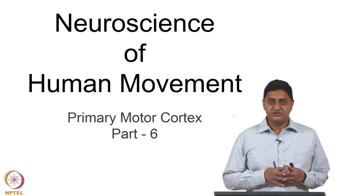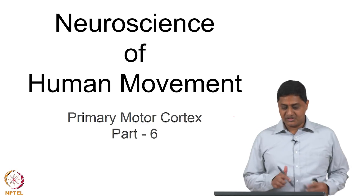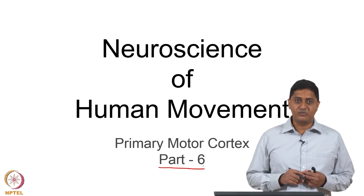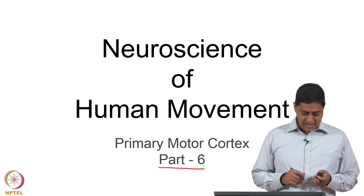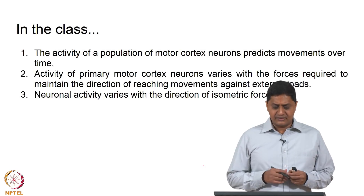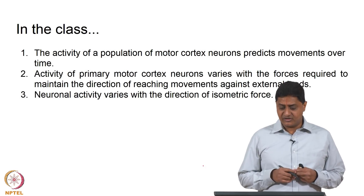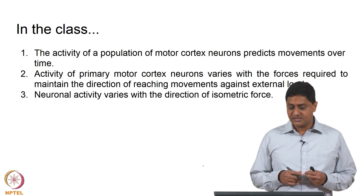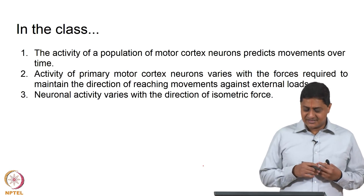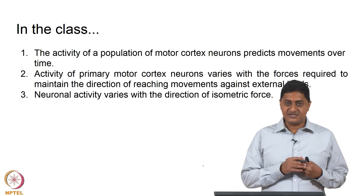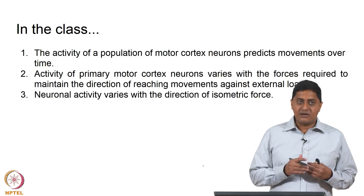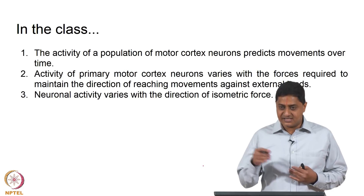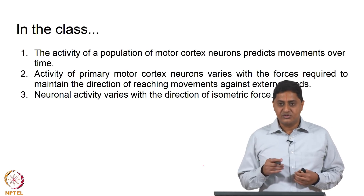Welcome to this class on Neuroscience of Human Movement. This is Part 6 of the discussion on primary motor cortex. In the previous class, we saw that a population of neurons can predict the direction in which the monkey is trying to move.